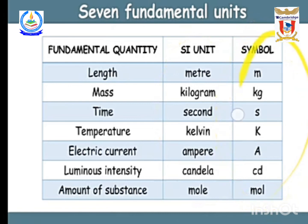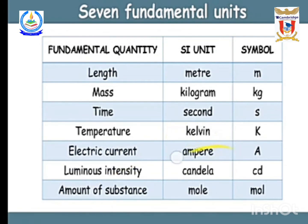These are the SI units and their symbols for the fundamental quantities. Amount of substance is mostly used in chemistry — when we measure the amount of any solute or solvent, we use the unit mole. Length: meter; mass: kilogram; time: second; temperature: Kelvin; electric current: ampere (capital A); luminous intensity: candela. These are the seven fundamental units used in physics, chemistry, and mathematics.